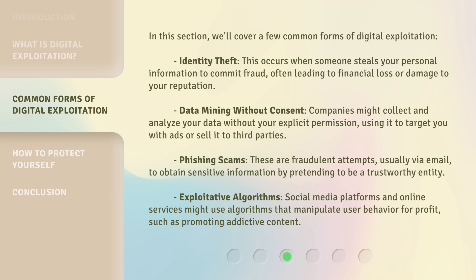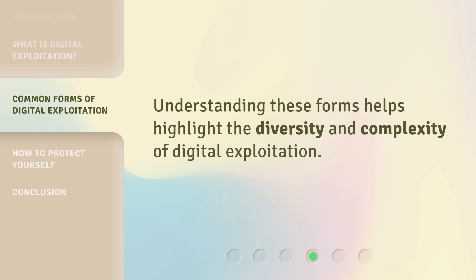In this section, we'll cover a few common forms of digital exploitation. Identity theft: this occurs when someone steals your personal information to commit fraud, often leading to financial loss or damage to your reputation. Data mining without consent: companies might collect and analyze your data without your explicit permission, using it to target you with ads or sell it to third parties. Phishing scams: these are fraudulent attempts, usually via email, to obtain sensitive information by pretending to be a trustworthy entity. Exploitative algorithms: social media platforms and online services might use algorithms that manipulate user behavior for profit, such as promoting addictive content. Understanding these forms helps highlight the diversity and complexity of digital exploitation.